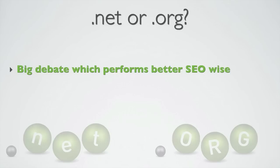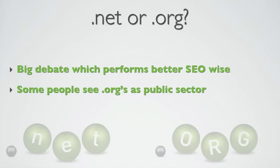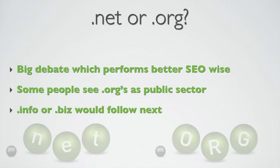You should consider what you're using the domain for, because some people still see .orgs as public sector or charity-style domains, so this could either work for you or against you depending on your niche. .infos and .bizzes would follow next, but there's loads of debate all over the internet over which performs better. Some people like .infos because they're meant to be informational sites, though .infos have always been cheap and widely used by spammers, so they do carry that association.